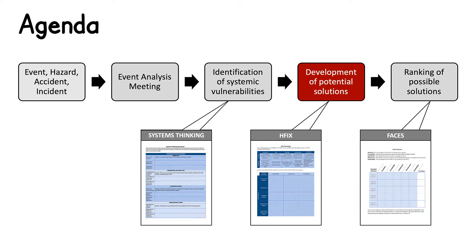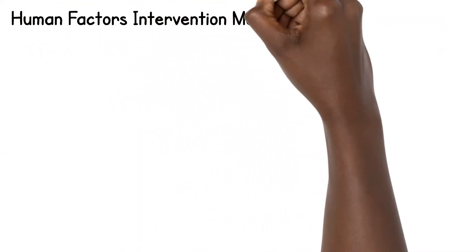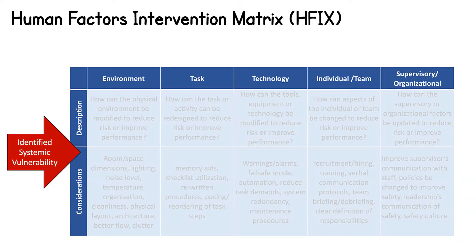Next, we will walk through the human factors intervention matrix, otherwise known as HFIX. HFIX is based on human factors engineering principles and can be used to develop interventions aimed at addressing specific threats or systemic failures identified. HFIX has five categories that center around a given system: environment, task, technology, individual and team, and supervisory and organizational factors. HFIX is a tool to help you think about identifying interventions at all layers of the system and facilitates the generation of a greater variety of approaches to attacking a given problem.